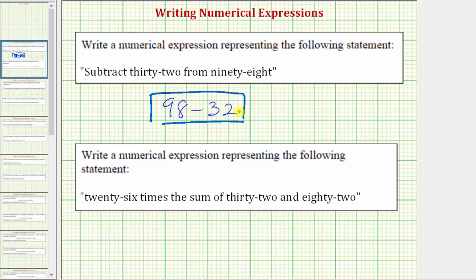In the next example we're asked to write an expression for 26 times the sum of 32 and 82. Because we have 26 times the sum, we'll need the sum in parentheses to make sure we have 26 times the sum.